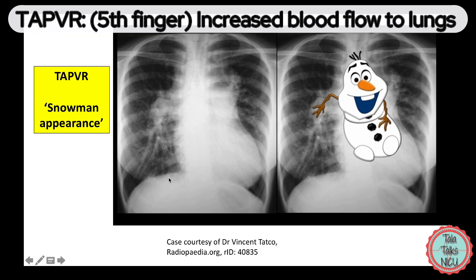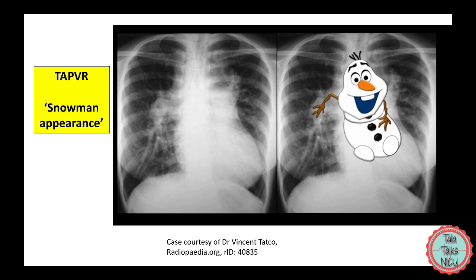Number five of the mnemonic is TAPVR — total anomalous pulmonary venous return — and the fifth finger is going up, so we have increased blood flow to the lungs, at least in the supracardiac type. All the blood coming back from the lungs and the body is going to the right atrium or the SVC, so the SVC and right atrium would be a lot larger. That's why we end up with this snowman-type appearance — like little Olaf.